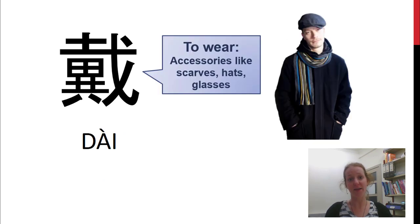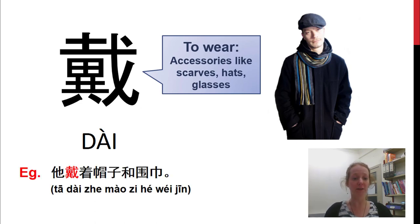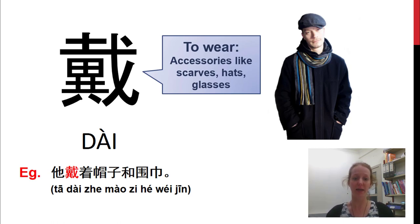第二, 这是戴. This means to wear as well, but in Chinese we use this word when we're talking about wearing accessories — things like hats, scarves, and glasses; things that we can add on on top. For example: 他戴着帽子和围巾. He is wearing a hat and a scarf.